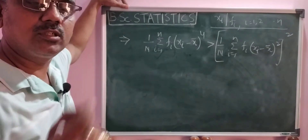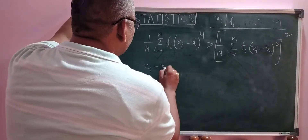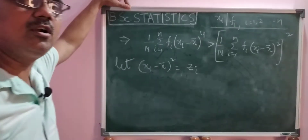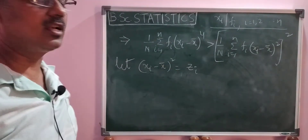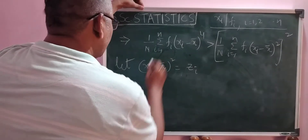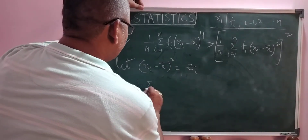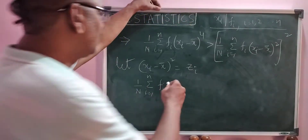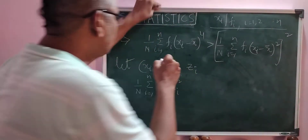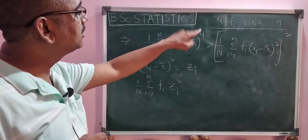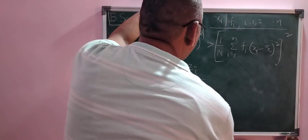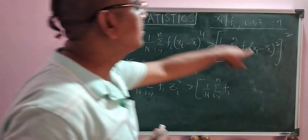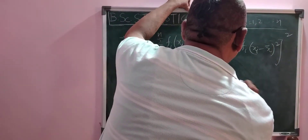Now I consider a small assumption: let (x_i minus x-bar) whole square equal z_i. So x_i minus x-bar whole square is z_i. Then the result becomes: 1 by capital N, summation i equals 1 to n, of f_i into z_i square — because (x_i minus x-bar) whole power 4 equals z_i square. This is greater than 1 by capital N, summation i equals 1 to n, of f_i into z_i.